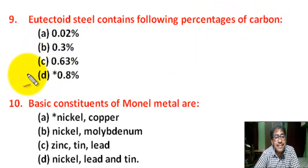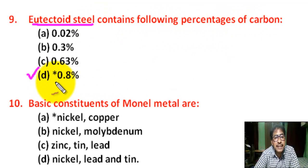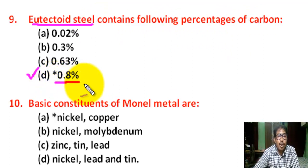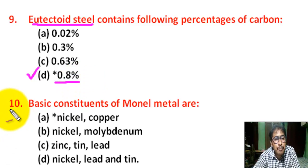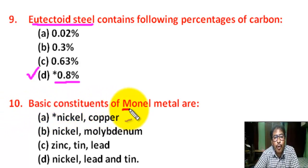Question number nine: eutectoid steel contains the following percentage of carbon — correct answer is D — eutectoid steel contains carbon percentage of 0.8%.